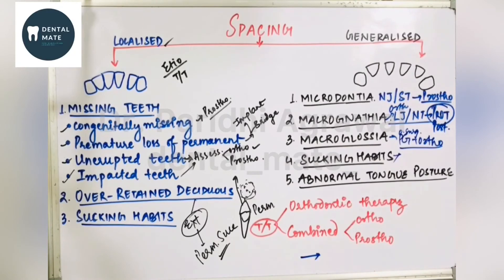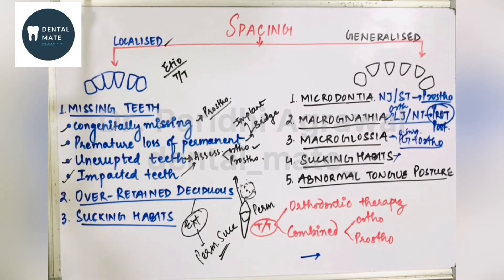Sucking habits can also cause generalized spacing because they cause flaring of teeth. Additionally, abnormal tongue posture can also cause generalized spacing. So these are the various causes, types, definition, etiology, and treatment plan for spacing.